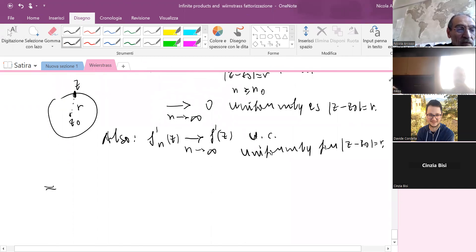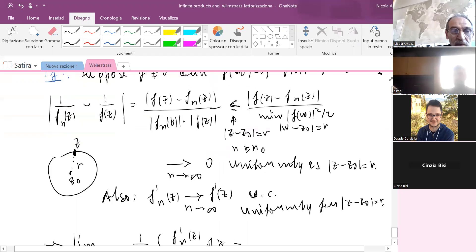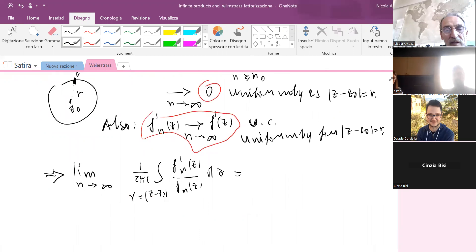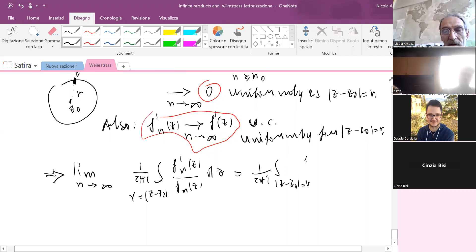So when you consider the limit as n goes to infinity of 1/(2πi) integral of f'n(z)/fn(z) dz where |z - z₀| = r, by these two facts, it's easy to see that this is 1/(2πi) integral of f'(z)/f(z).